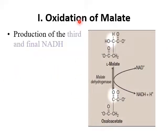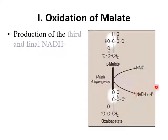The last step of Krebs cycle is the oxidation of malate. Malate is converted into oxaloacetate with the help of malate dehydrogenase enzyme. This is a reversible step, and at this step the third and final NADH of the Krebs cycle is produced.